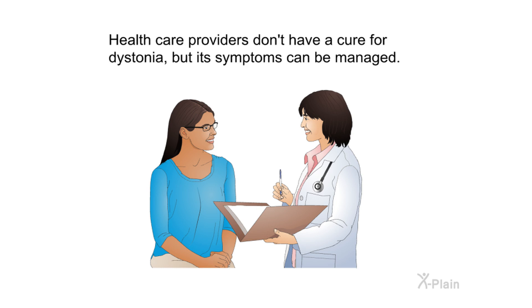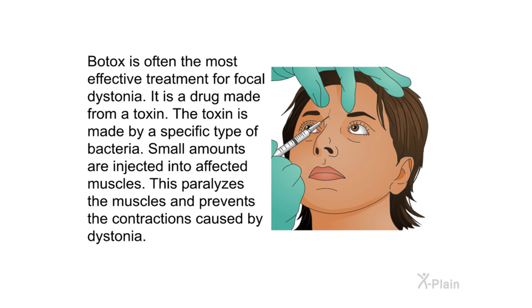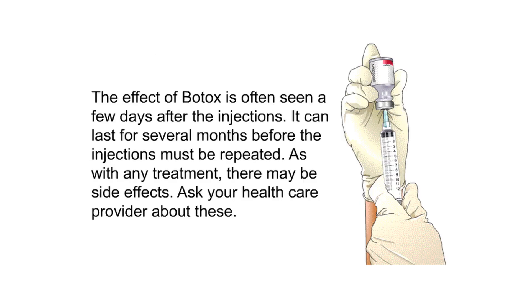Health care providers don't have a cure for dystonia, but its symptoms can be managed. Botox is often the most effective treatment for focal dystonia. It is a drug made from a toxin produced by a specific type of bacteria. Small amounts are injected into affected muscles, which paralyzes the muscles and prevents the contractions caused by dystonia. The effects are often seen a few days after the injections and can last for several months before the injections must be repeated. Ask your health care provider about possible side effects.